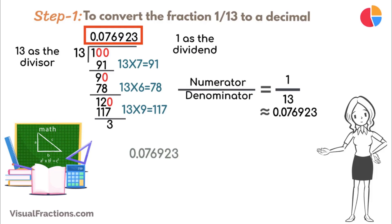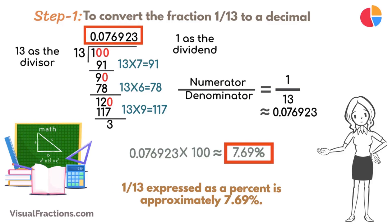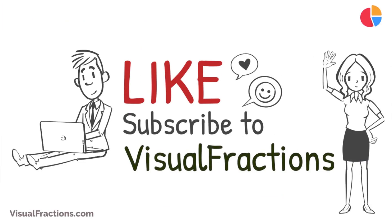Now, to convert 0.076923 repeating to a percent, we simply multiply it by 100, resulting in approximately 7.69%. So, there we have it. The fraction 1/13 expressed as a percent is approximately 7.69%.